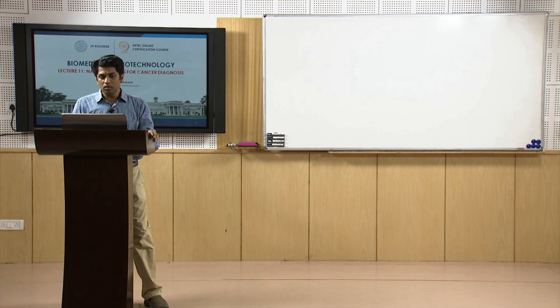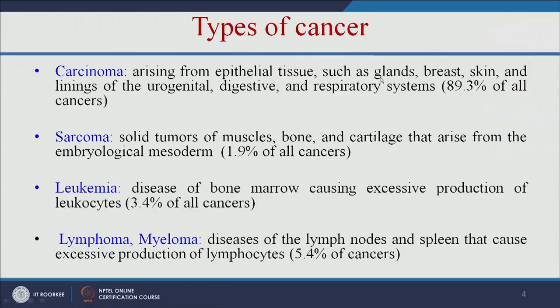These are the various types of cancer. Carcinoma arises from epithelial tissue such as glands, breast, and skin, and constitutes about 90% of all cancers. Sarcoma consists of solid tumors of muscles and bone, making up 2% of all cancers.